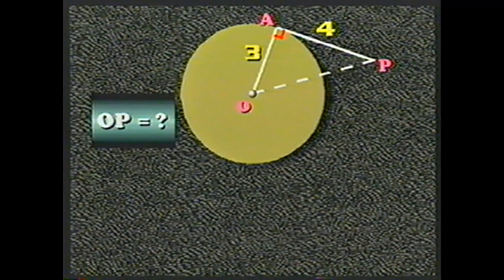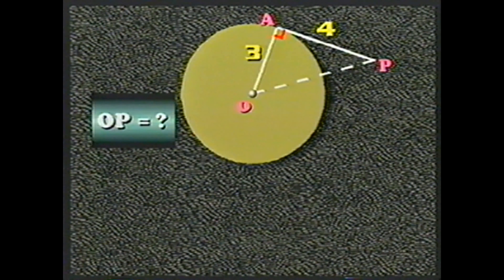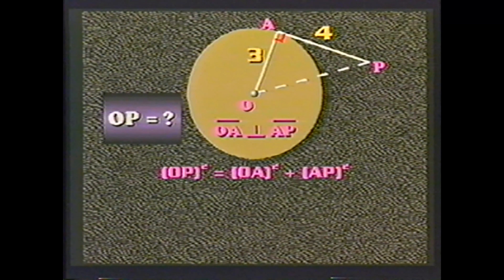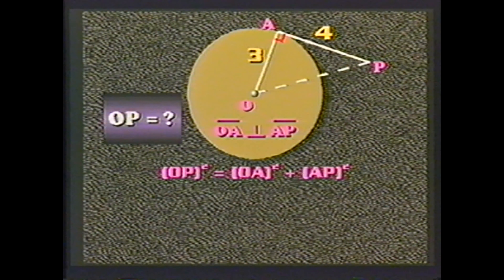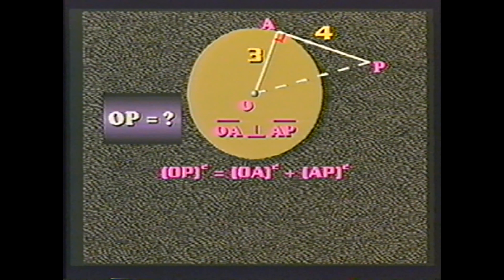Now that we know some of the vocabulary, we can explain some theorems about the lines associated with the circle. First, a few facts about tangent lines. A radius that touches the circle at the point of tangency must be perpendicular to that tangent. And conversely, if a line is perpendicular to the end of the radius, then that line must be tangent to the circle.